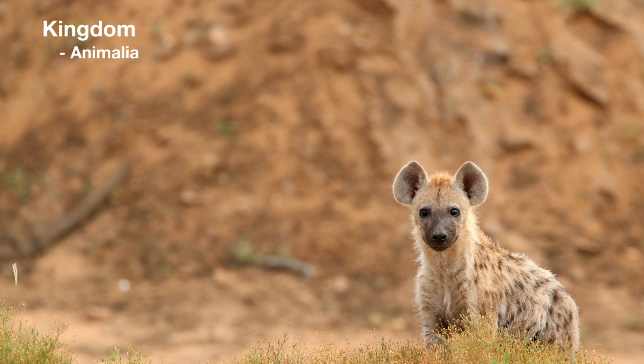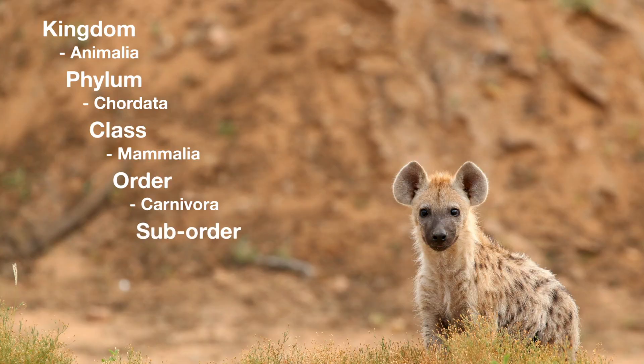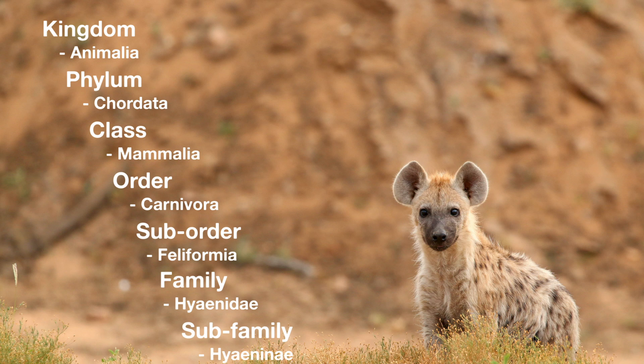Now let's break down a hyena's classification. Because it's an animal, under kingdom we put Animalia. Under phylum we put Chordata because it has a spinal cord, and under class it's Mammalia because it's a mammal. Under order it's Carnivora because it's a meat-eating mammal. The order Carnivora is split into two sub-orders for land carnivores: Feliformia and Caniformia — Feliformia being cats and Caniformia being dogs. The sub-order for a spotted hyena is Feliformia, and the family is known as Hyenidae, with the spotted hyena in the Hyeninae sub-family.